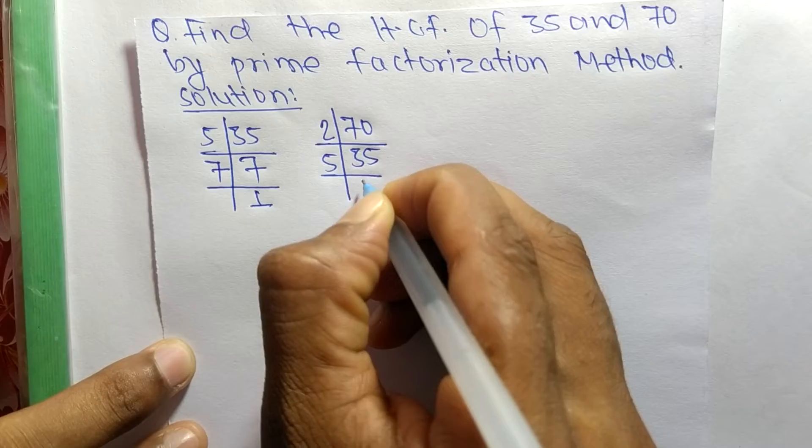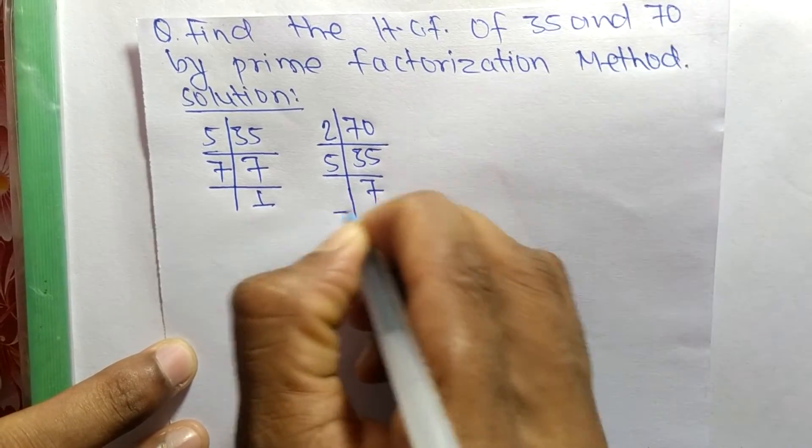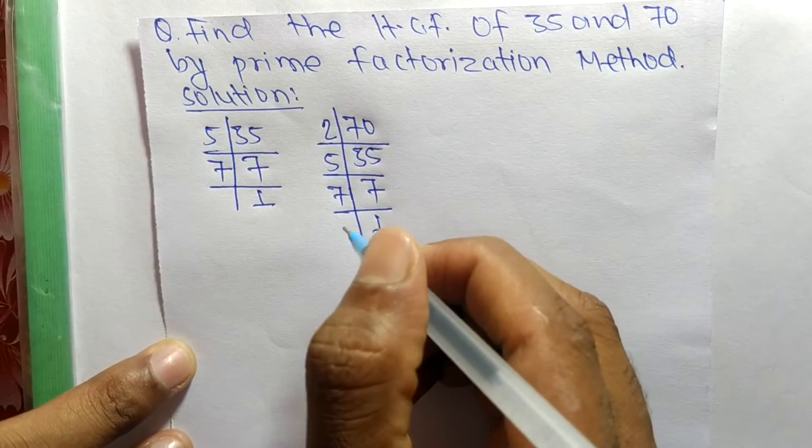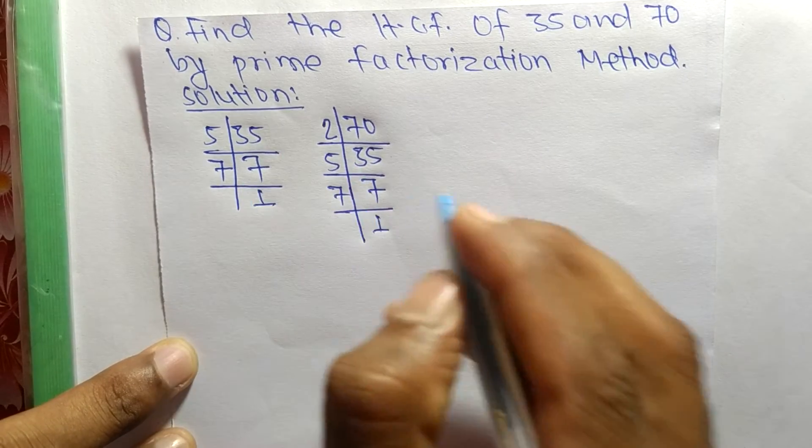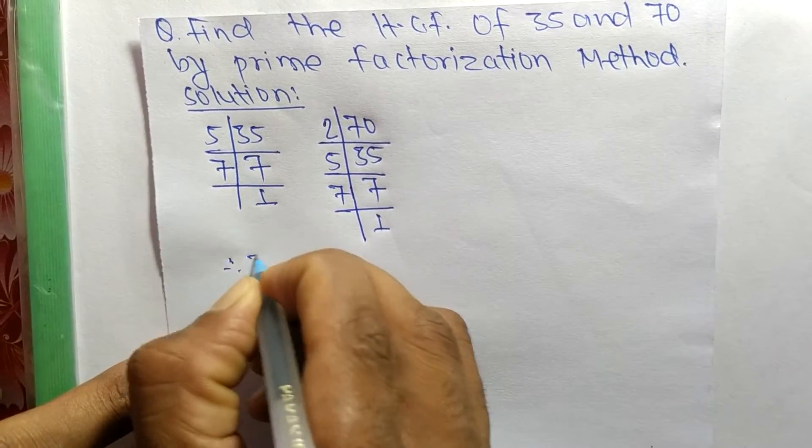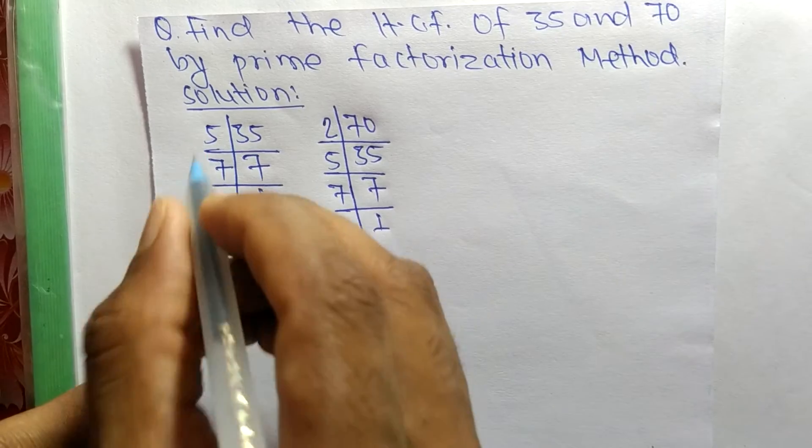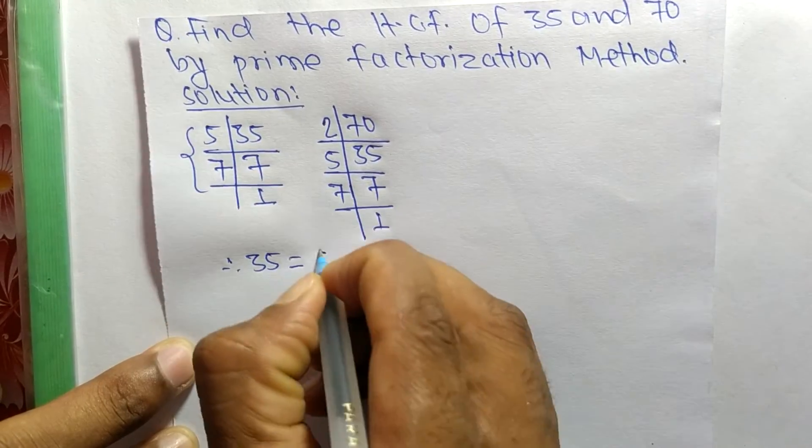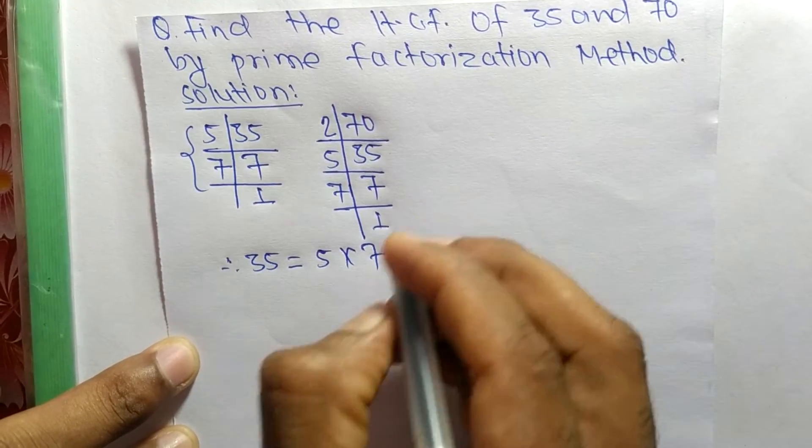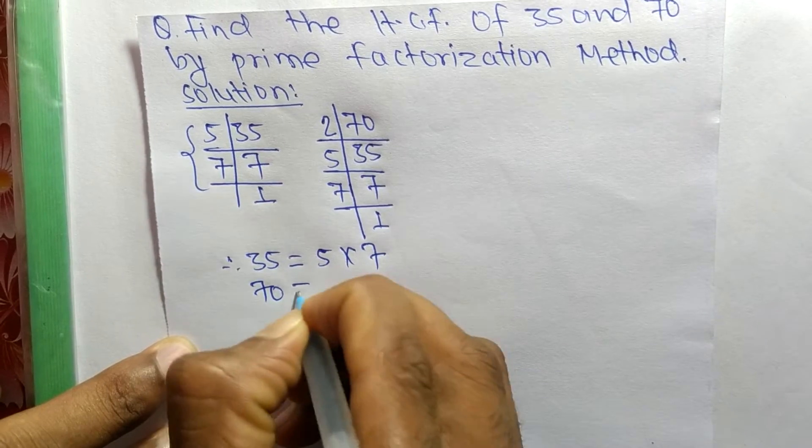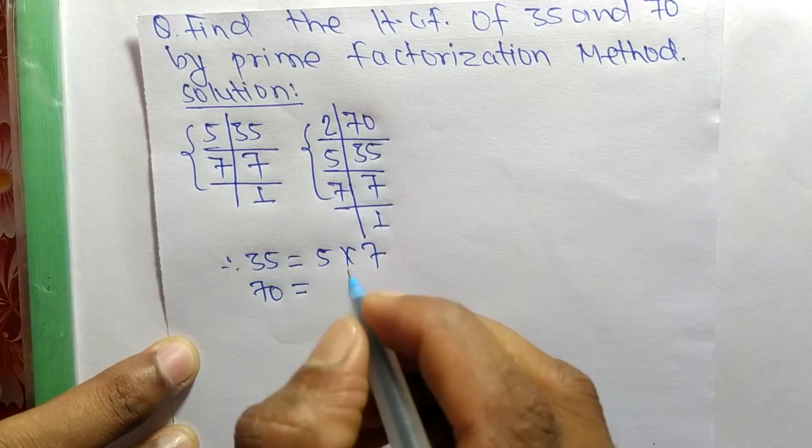5 times 7 equals 35, and 7 times 1 equals 7. So from these prime factors we can write 35 is equal to 5 times 7, and 70 is equal to 2 times 5 times 7.